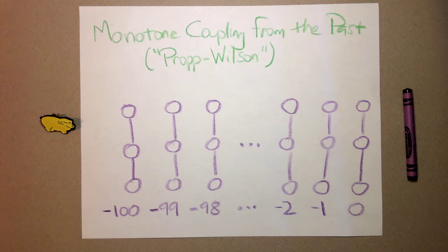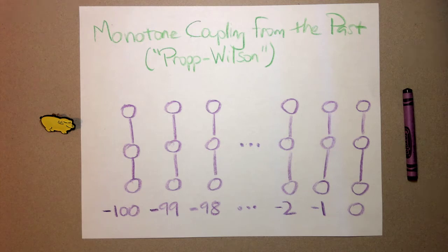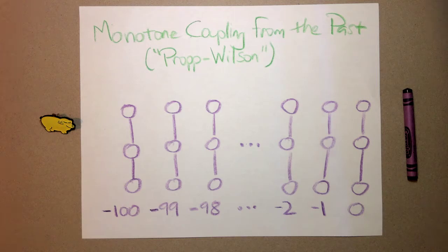Tap on that card so you don't forget what it is, make a note of what it is, and then tell me I can turn around. And amazingly I will be able to tell you what the tapped card was. How does the trick work? I'll tell you at the end of the video. But first I have to tell you about monotone coupling from the past.